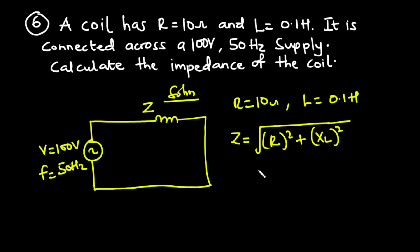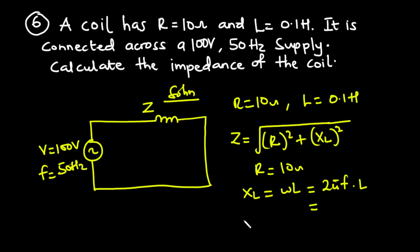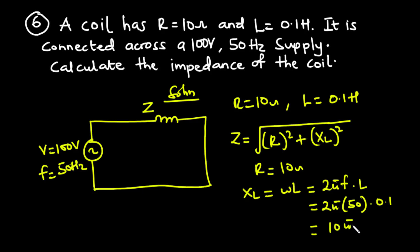We know R equals 10 ohms. For XL, the inductive reactance, XL equals omega L, and omega equals 2 pi F times L. With frequency 50 hertz, that is 2 pi times 50 times 0.1, which equals 10 pi. So XL equals 10 pi.